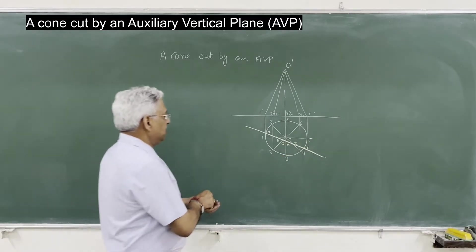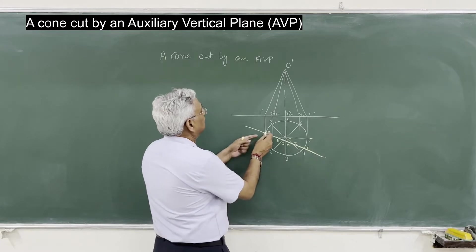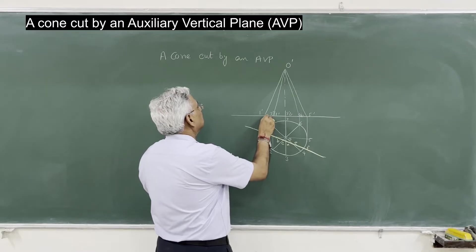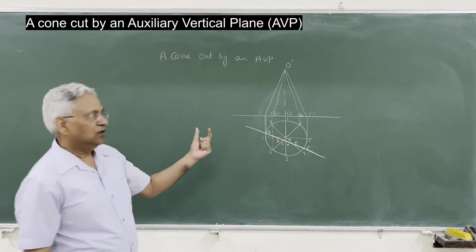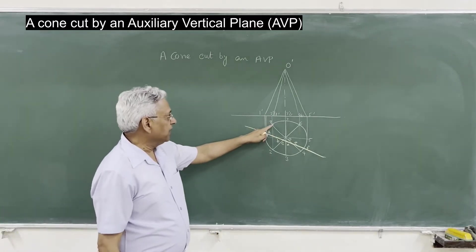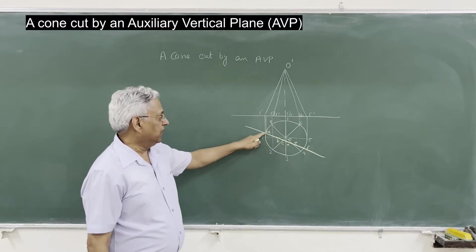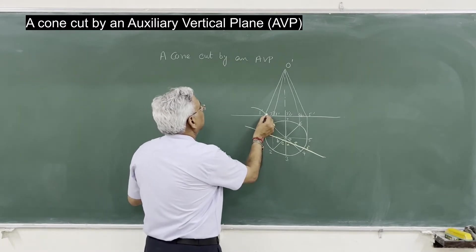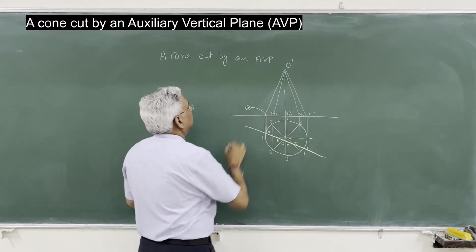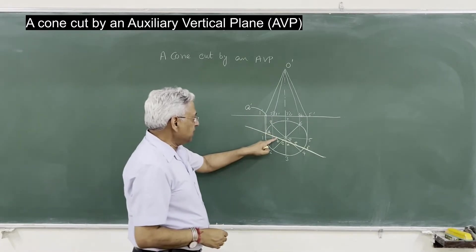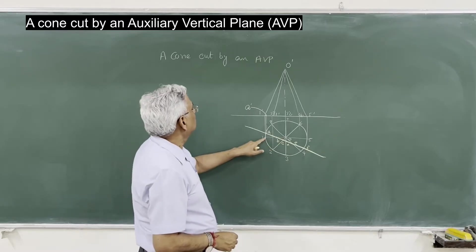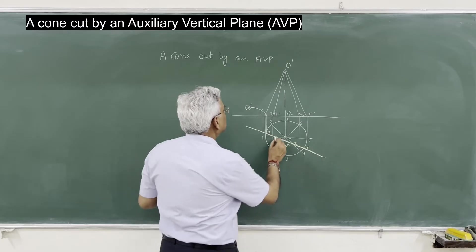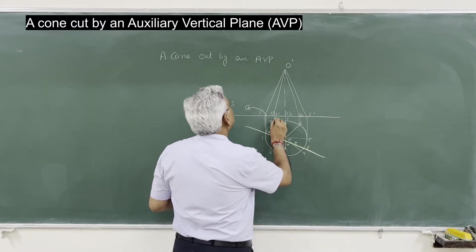If you draw the elevation of point A, it will be on the ground line — on 1-8, that is the point A-dash. B is on O-1, and O-1 is the outermost line, so this is the point B.